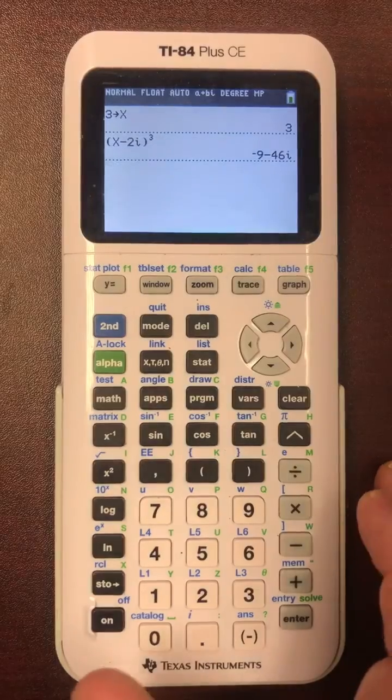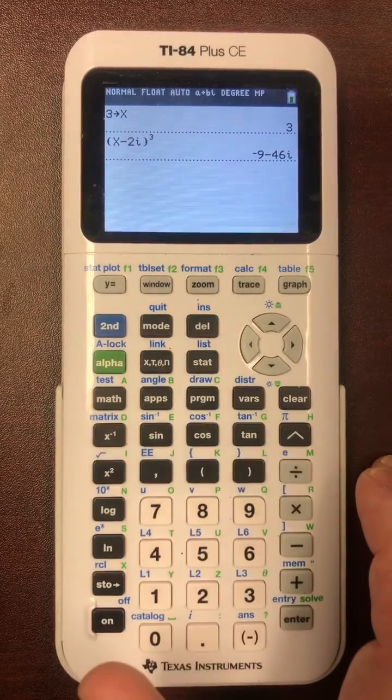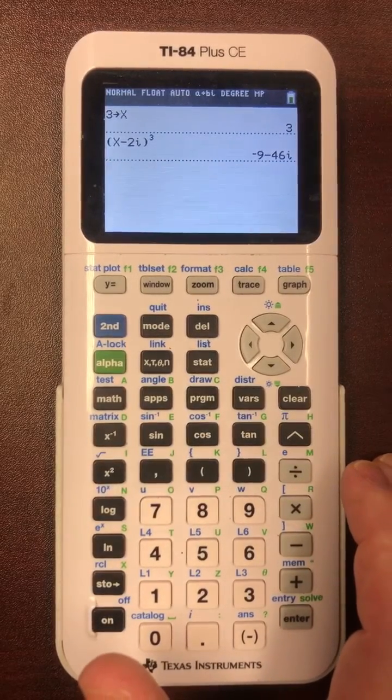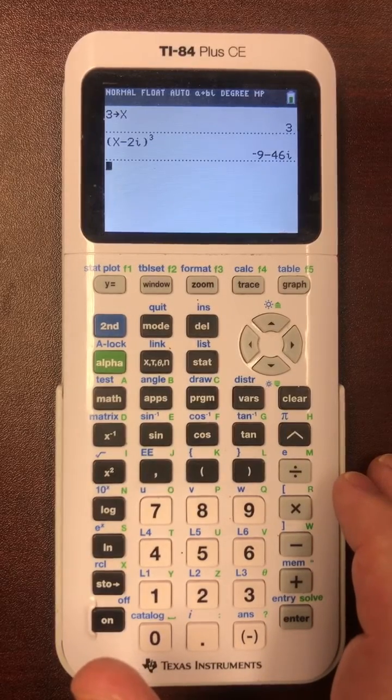Now as you know, if you had to do the expansion of that, it would take a long time and the chance of a flipped negative sign would be very high. It would take almost half a page to write it out.